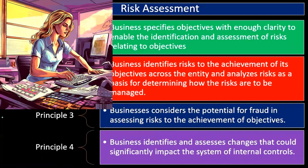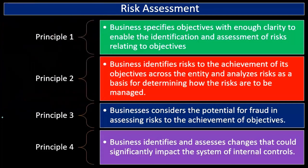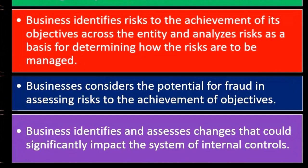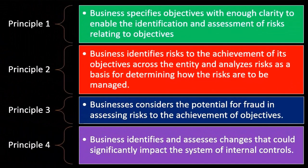Principle number four: business entities assess changes that could significantly impact the system of internal controls. We identify and assess any changes, and anytime we have a significant change, we should map out what the risks related to that significant change are going to be, then make adjustments as necessary based on those changes and the adjusted risks.